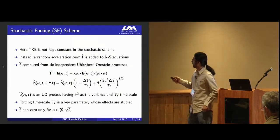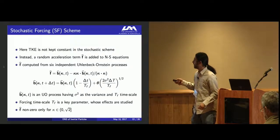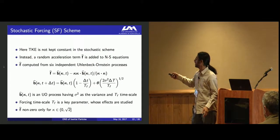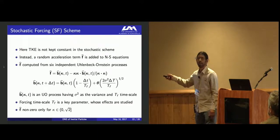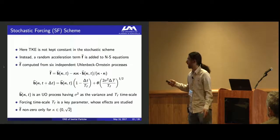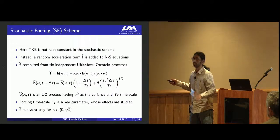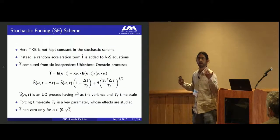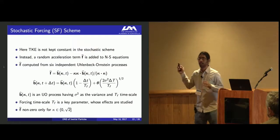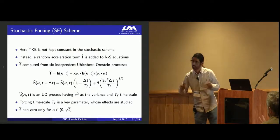In stochastic forcing scheme, the turbulent kinetic energy is not kept constant. Instead, a random acceleration term f_hat is added to the Navier-Stokes equations, computed using Ornstein-Uhlenbeck-Einstein processes given by these expressions. Here b_hat is the Ornstein-Uhlenbeck-Einstein process, sigma squared is the variance, and t_f is the timescale. Forcing timescale t_f is the key parameter in stochastic forcing. We study the effects of how turbulent simulations are affected as we vary timescale t_f. f_hat is only non-zero in wave number region 0 to root 2, zero everywhere else.